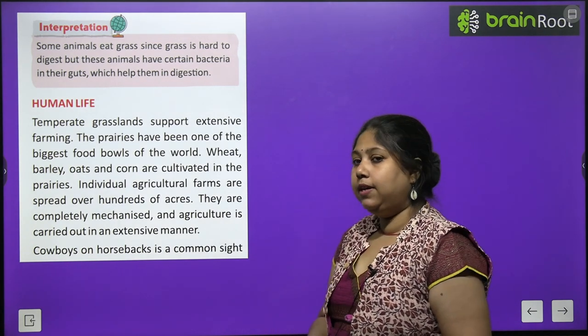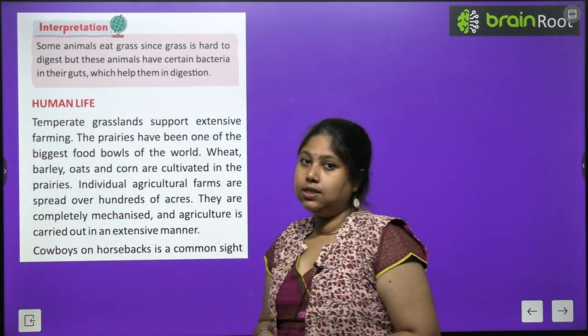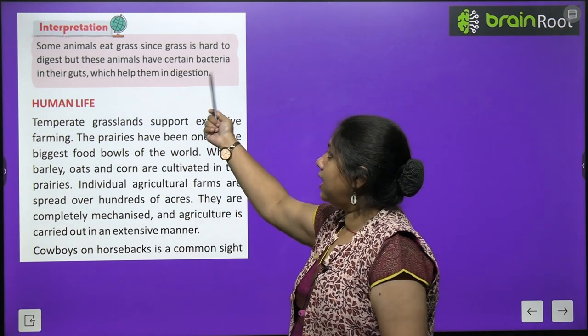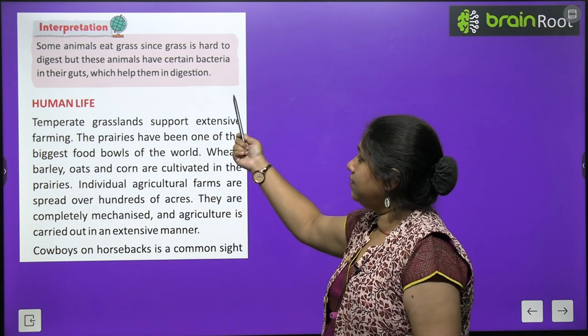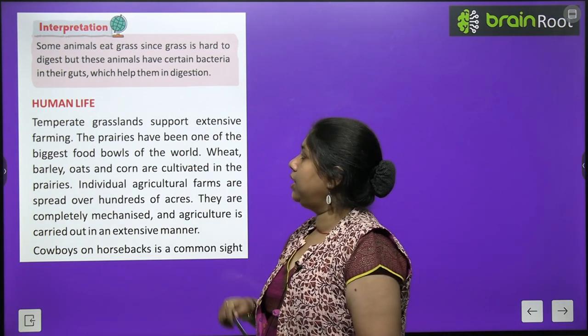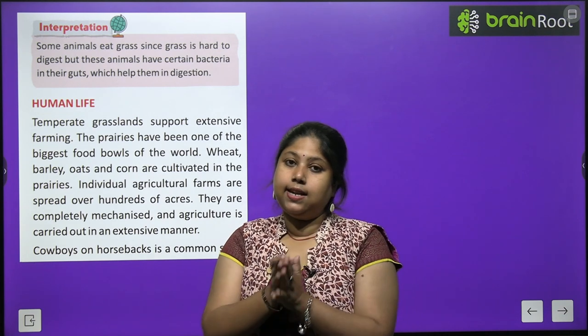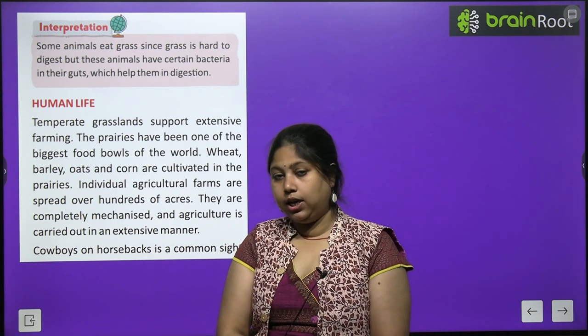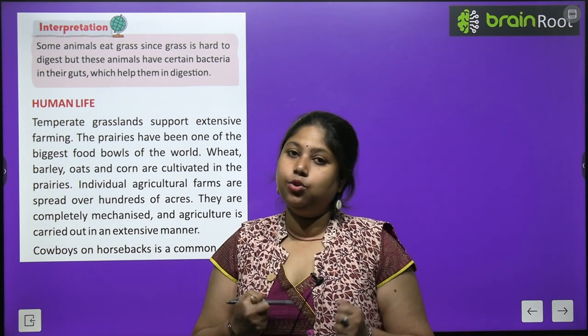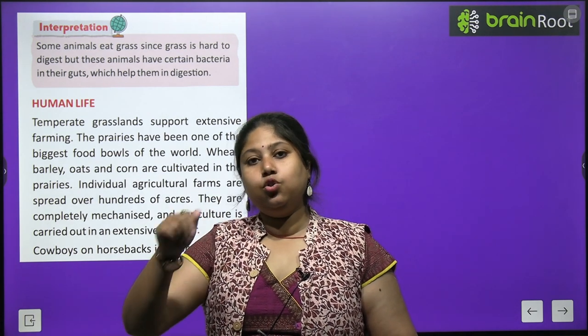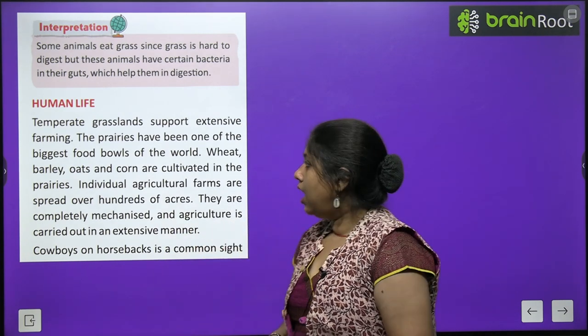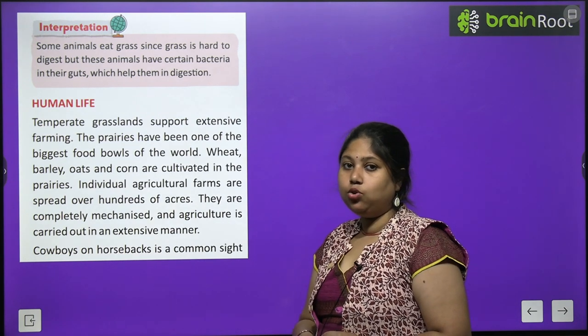A fun fact about grassland animals: some animals eat grass, which is hard to digest. However, these animals have special bacteria in their guts that help them digest grass easily. This is why they can thrive on the abundant grass available in grasslands.